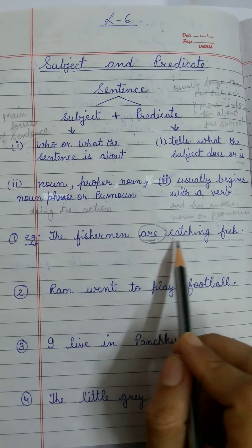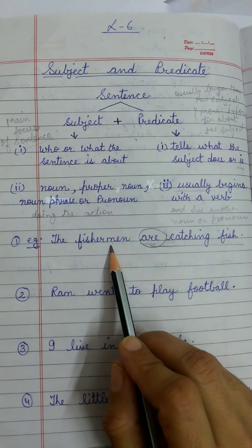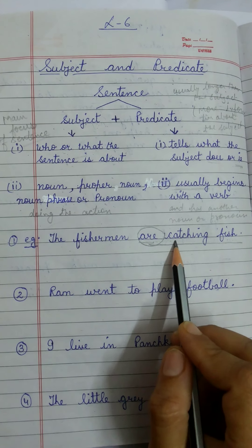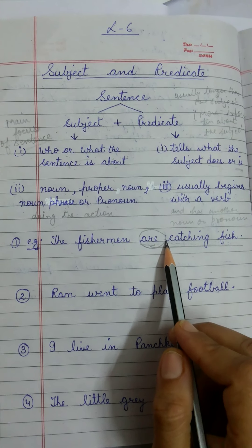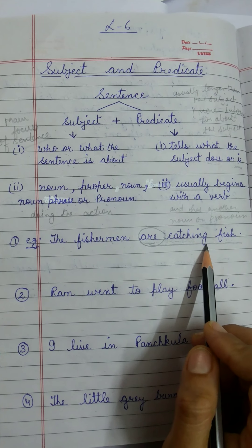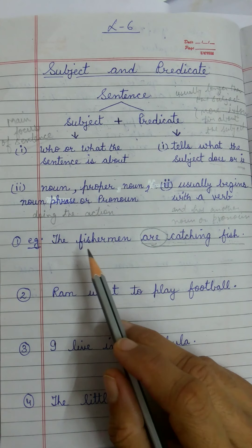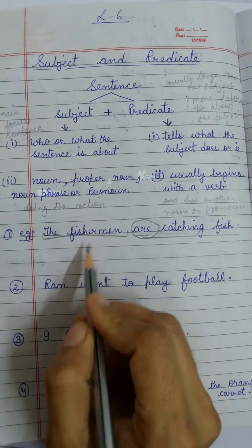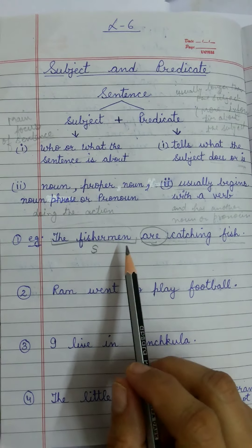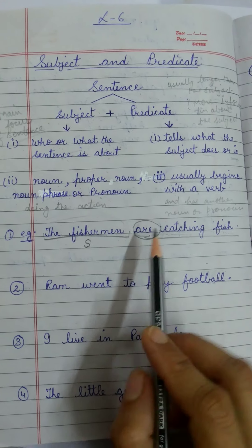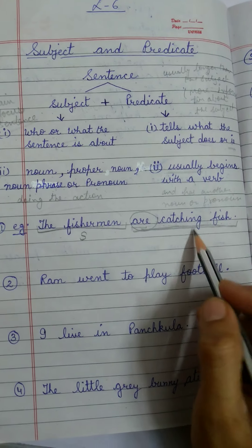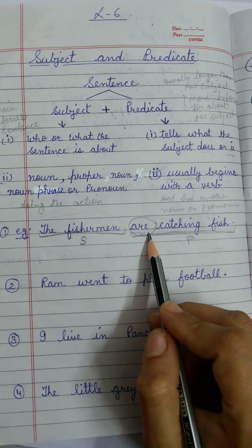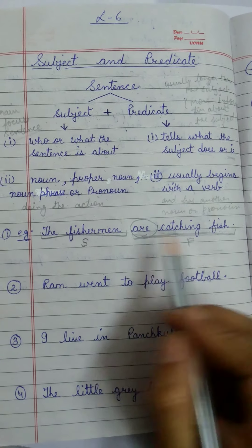Let's understand with examples. When I read a sentence about fishermen, the picture that comes to mind is of fishermen catching fish. The action here is 'catching.' So I ask: who are catching fish? The answer is 'the fishermen.' So 'the fishermen' becomes my subject — the main focus of the sentence, the persons doing the action. And 'are catching fish' will be my predicate. Here 'are' is the linking verb and 'catching' is the action done by the fishermen. My predicate begins with a verb.